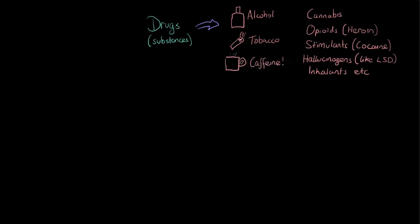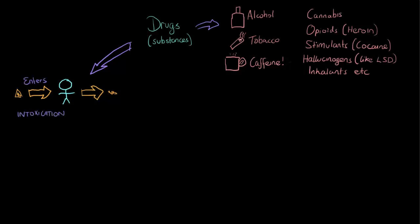When we consider drugs, there are several things we also need to look at. We have to consider what happens when drugs enter the body and also what happens when they exit — these are two different processes. The first process, when the drug actually goes into a human body, we can call intoxication. That's when the drug exerts its effect on somebody. If it exits after a period of prolonged use, we may experience something called withdrawal.